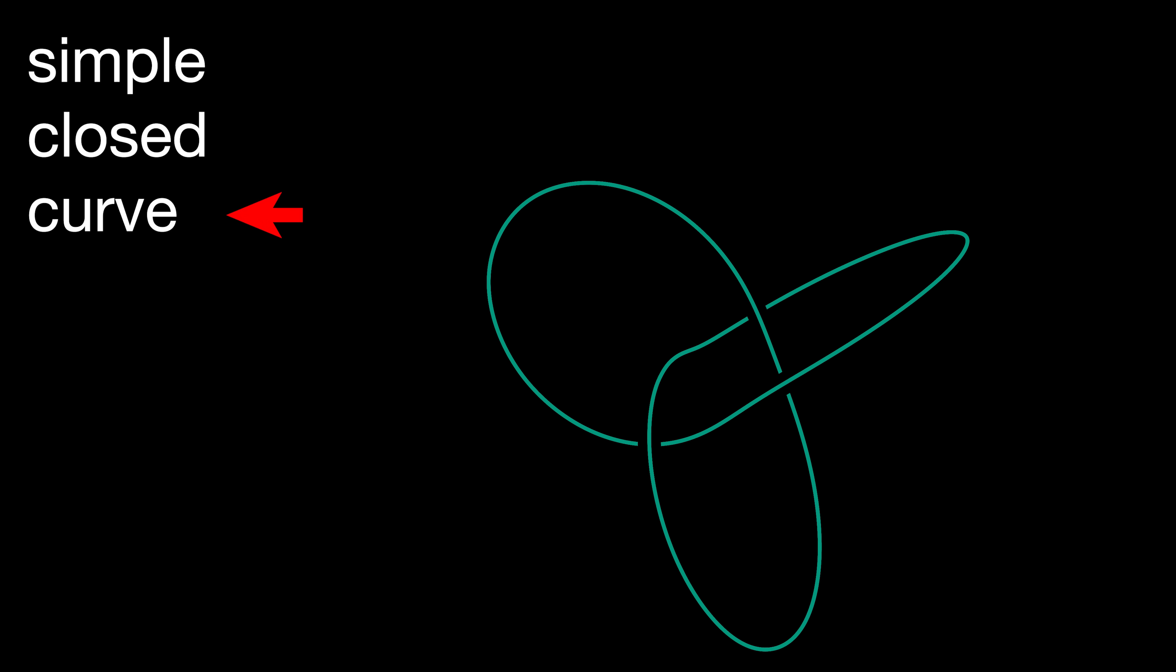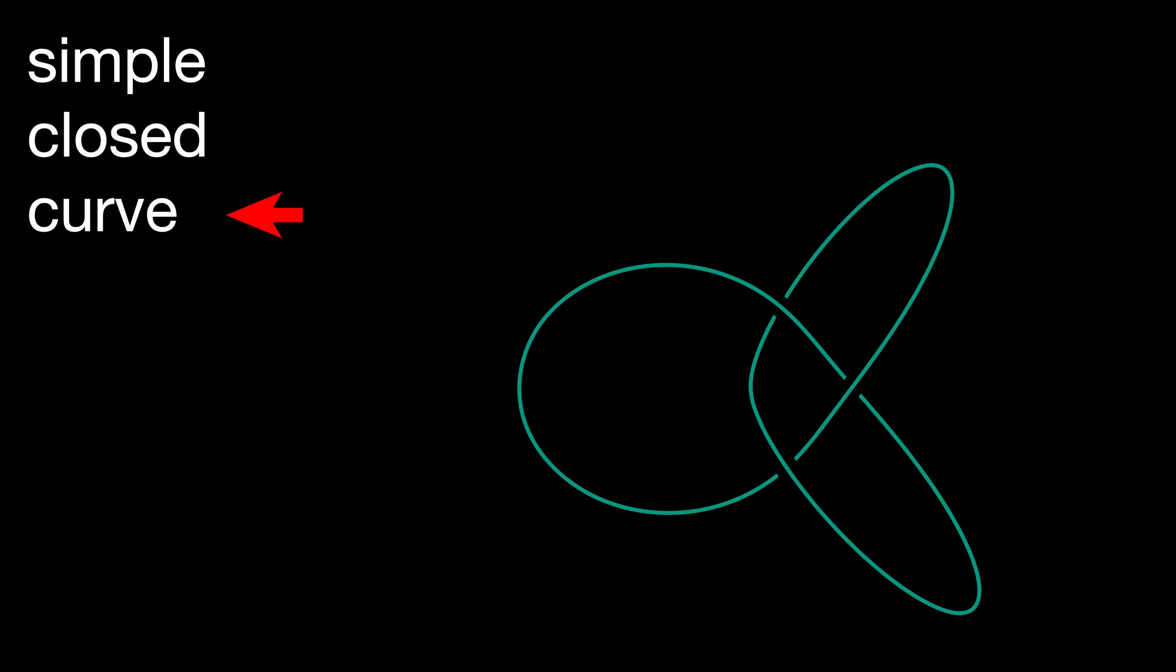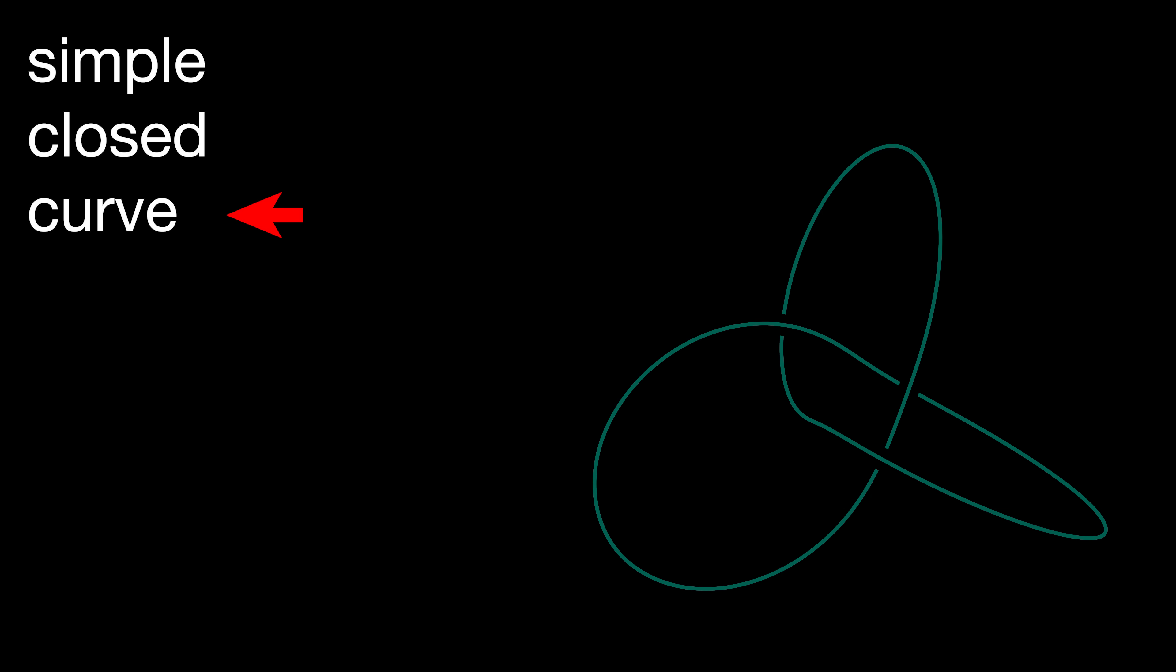So what's a curve? A curve is the image of a continuous map of a line segment into space. For example, this knot, the trefoil, is the image of the interval from 0 to 2π under this continuous map.